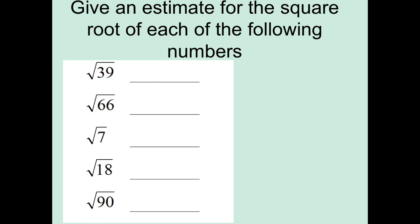Remember, the two acceptable ways that we estimate are finding between which two consecutive integers and to which number it's closest. So, we start with the square root of 39. It's not on our perfect squares list, but if it were, it would be somewhere between the square root of 36 and the square root of 49. Square root of 36 is 6, and square root of 49 is 7, so we could say it's between 6 and 7. But because 39 is closer to 36, it would also be acceptable to say it's about 6.